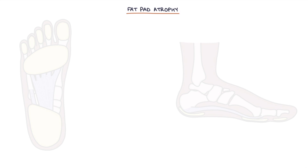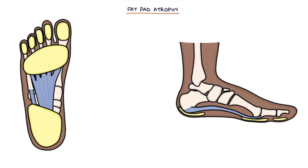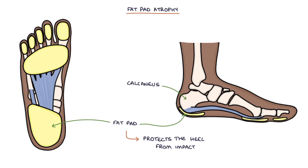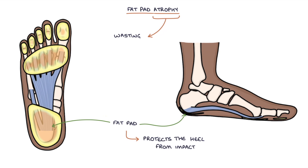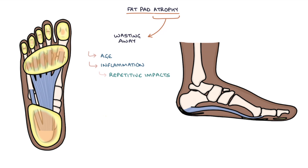Next, let's talk about fat pad atrophy. Fat pad atrophy affects the fat pad over the heel of the foot, which is under the calcaneus bone. The fat pad normally protects the heel from impact. Atrophy, which means wasting away, of the fat pad can occur with age or inflammation from repetitive impacts such as jumping activities, running, walking, and obesity.